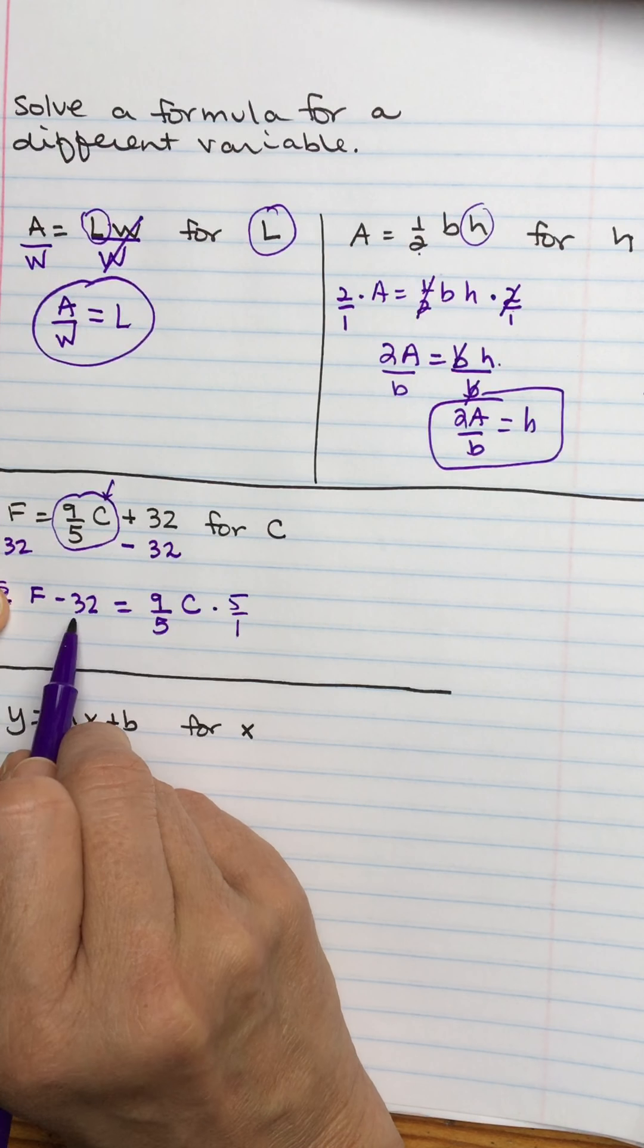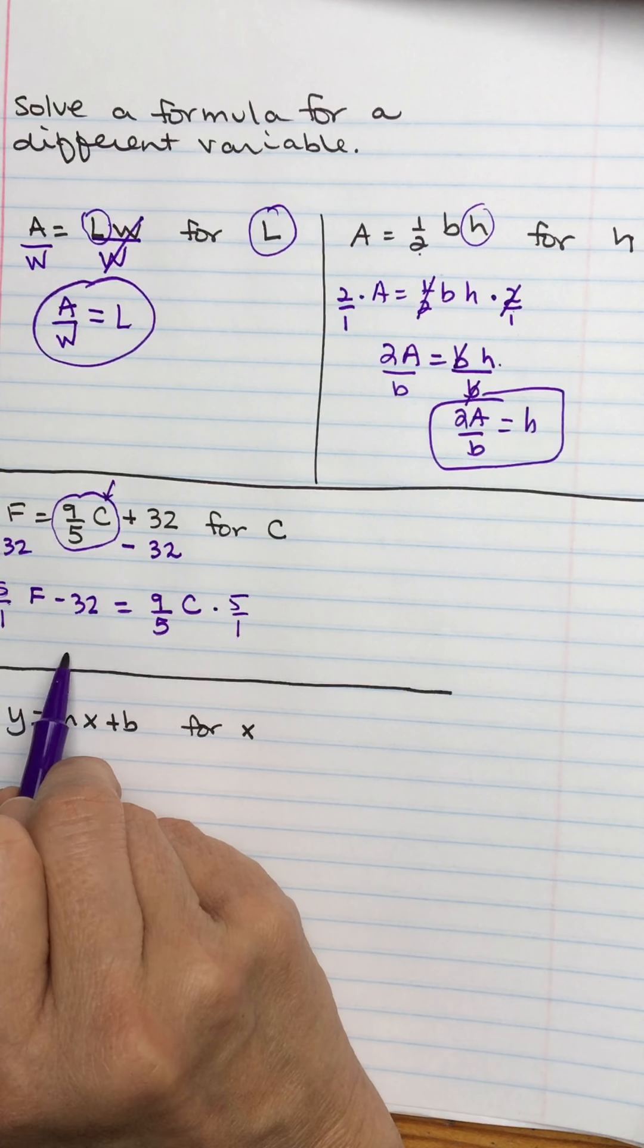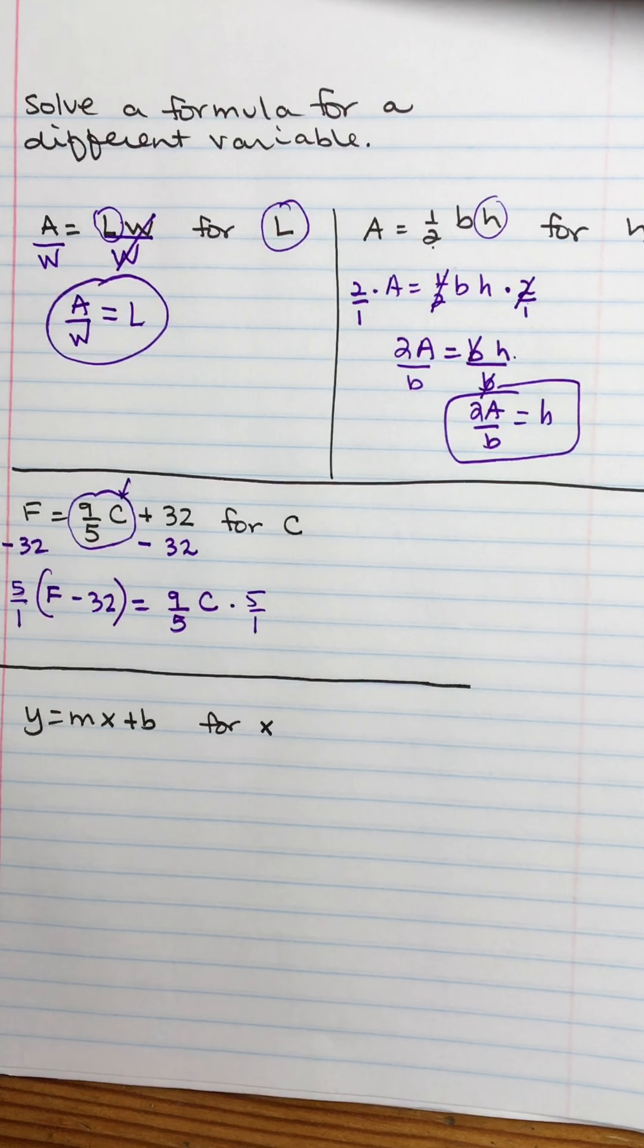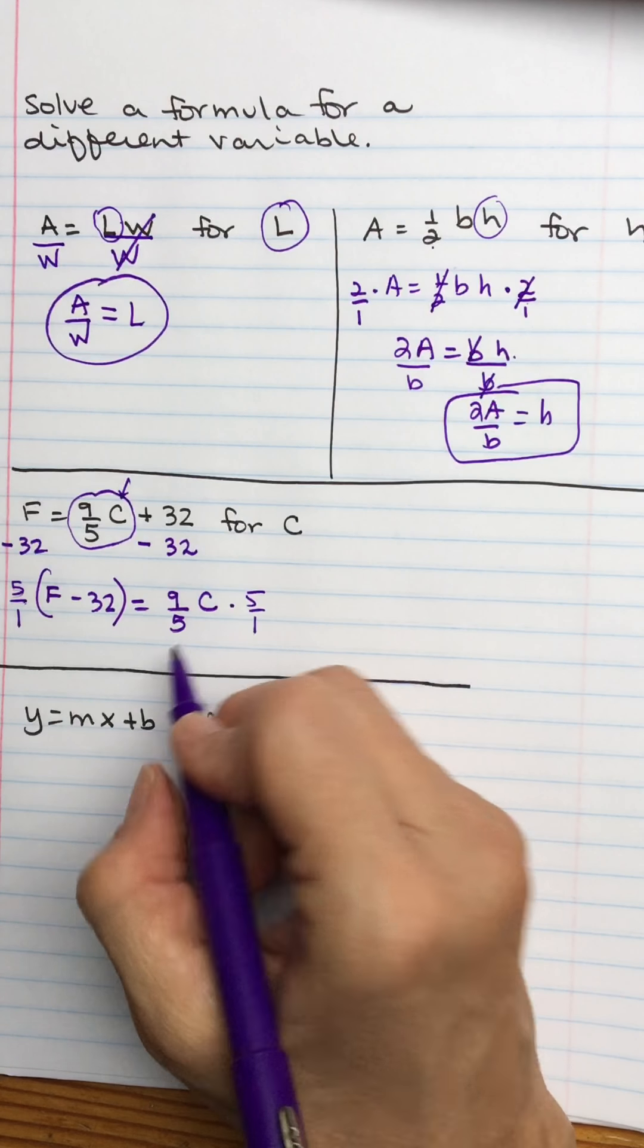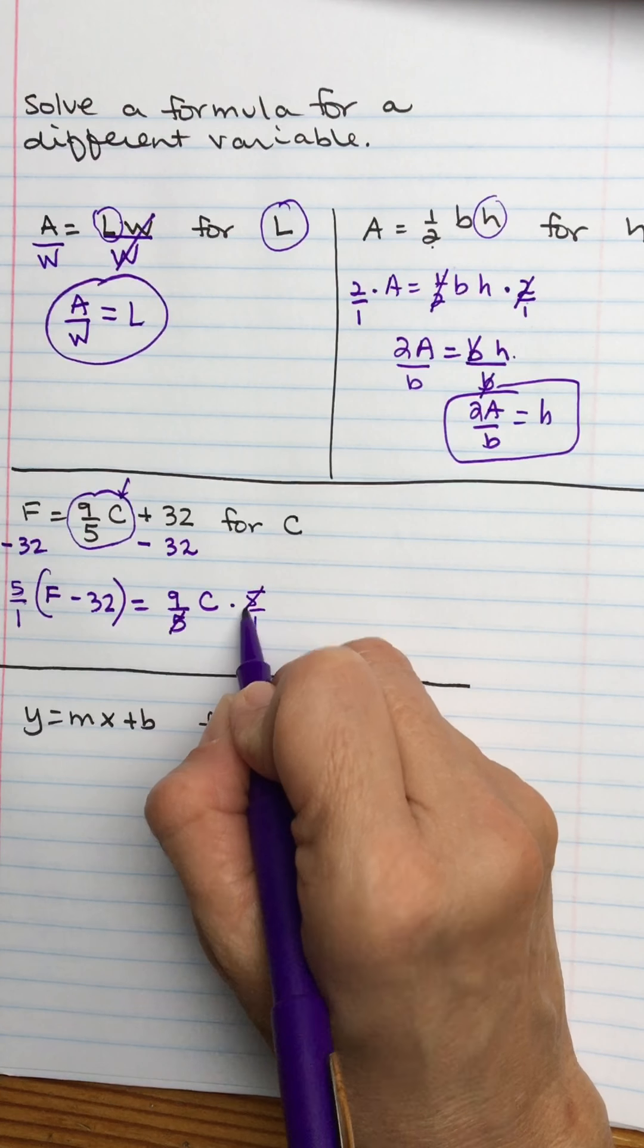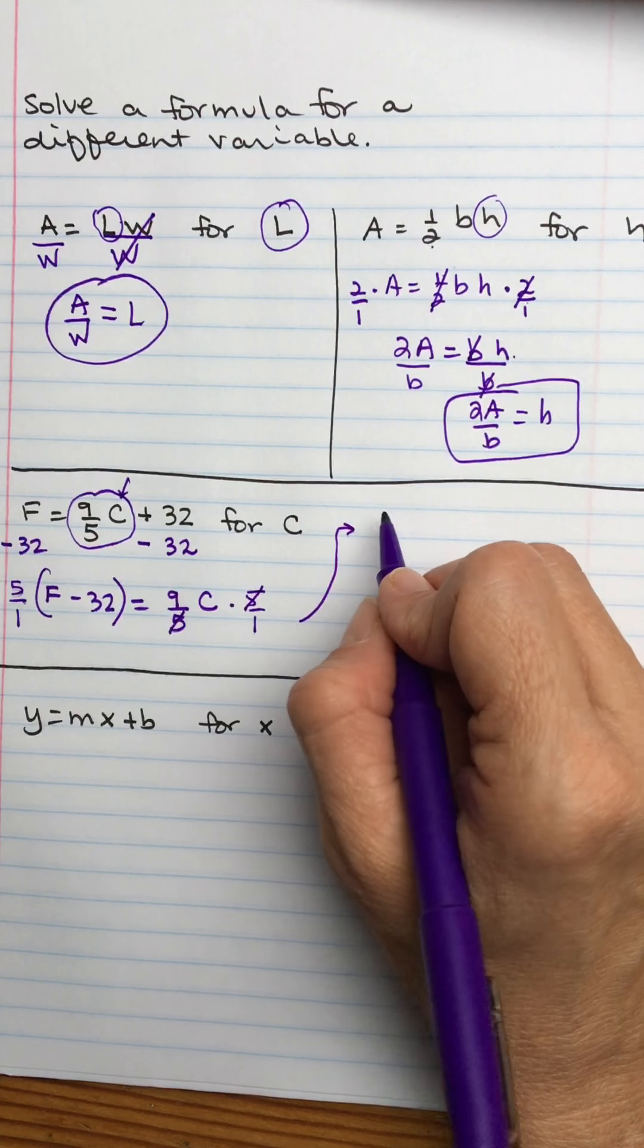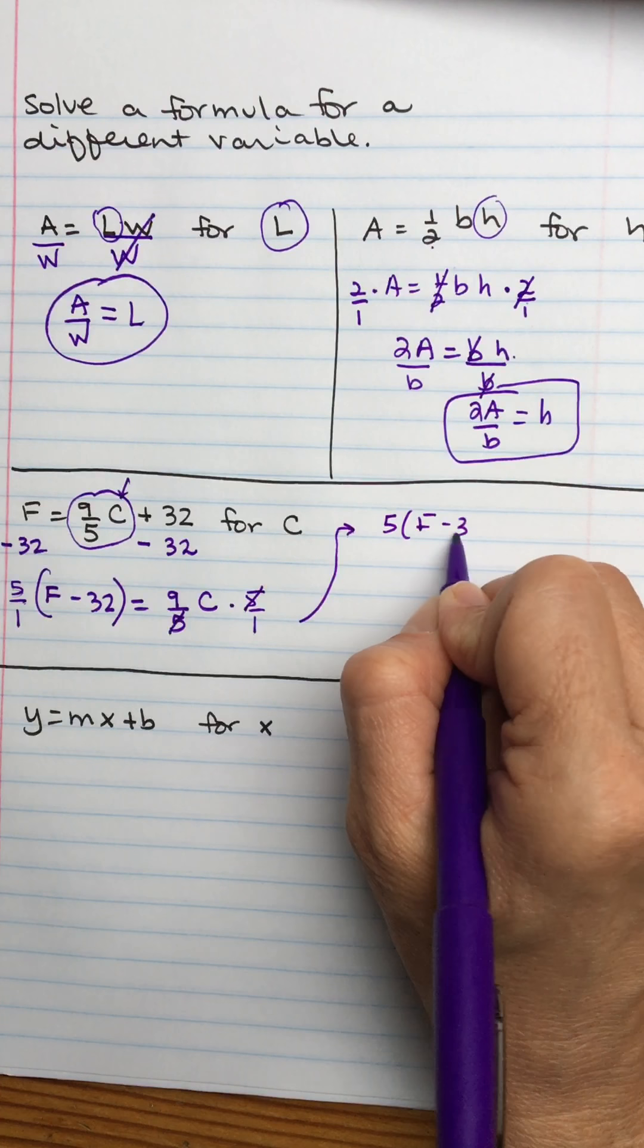And my voice is going up because notice my left-hand side has two terms on it. I have the F and I have the minus 32. Both of those need multiplying by that 5, so I'm going to wrap parentheses around it so that I don't have to distribute.